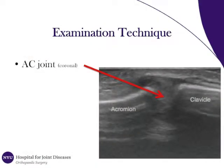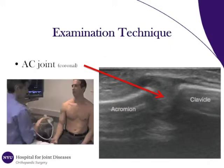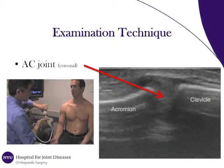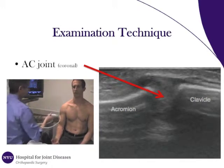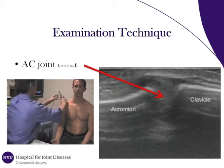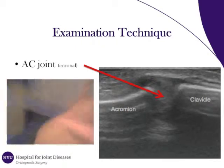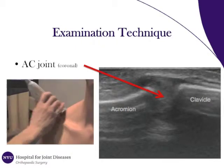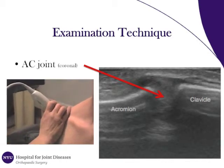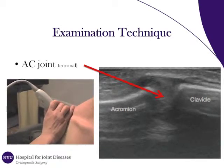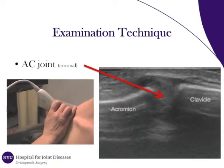The AC joint is the next structure to be imaged. This is done in the coronal plane. The patient is positioned with the arm at the side, with the elbow flexed and forearm fully supinated. Be sure to apply an adequate amount of ultrasound gel to the probe prior to obtaining the image. The probe is held directly above the AC joint to produce the image, with the AC joint demarcated by the red arrow.